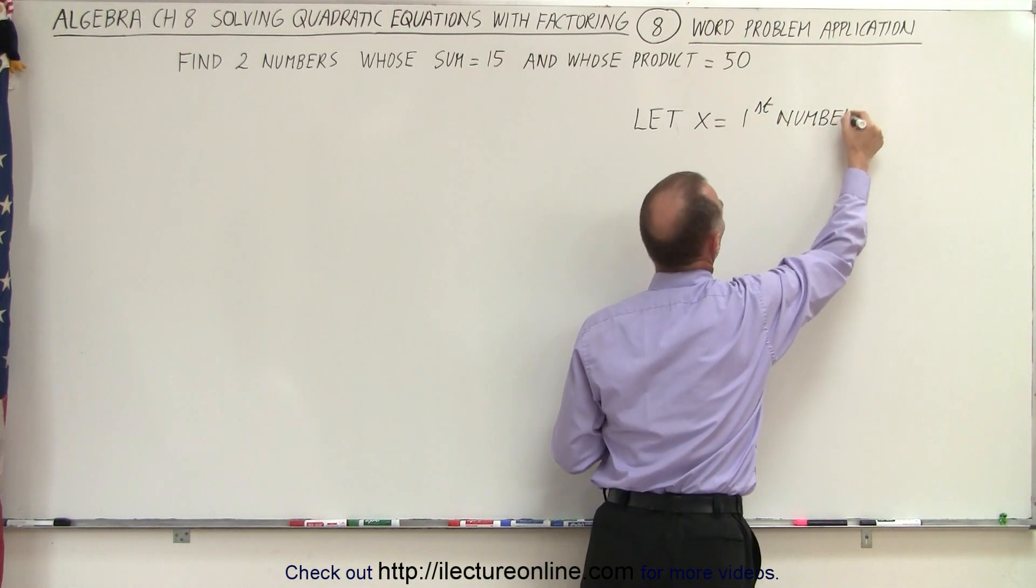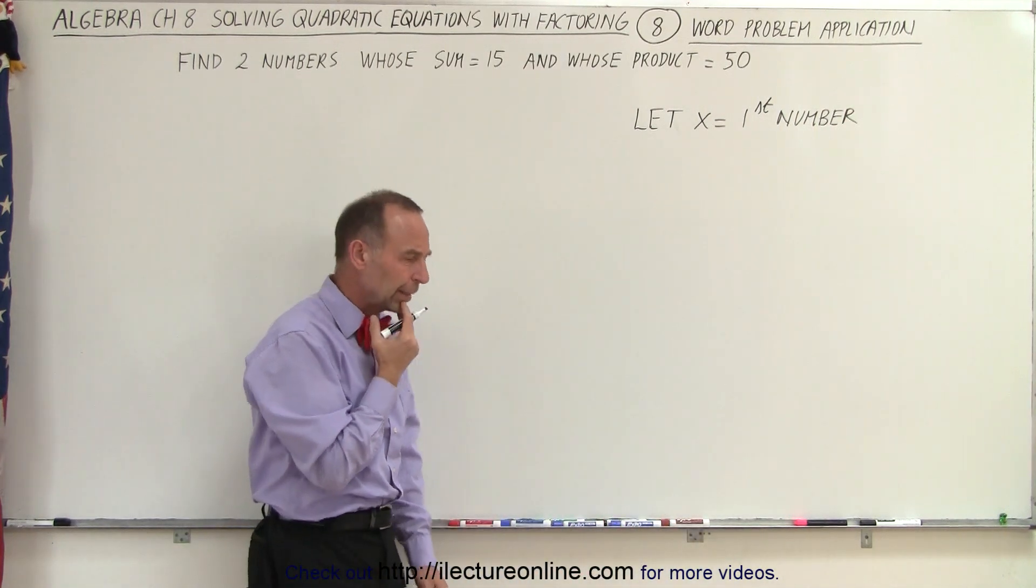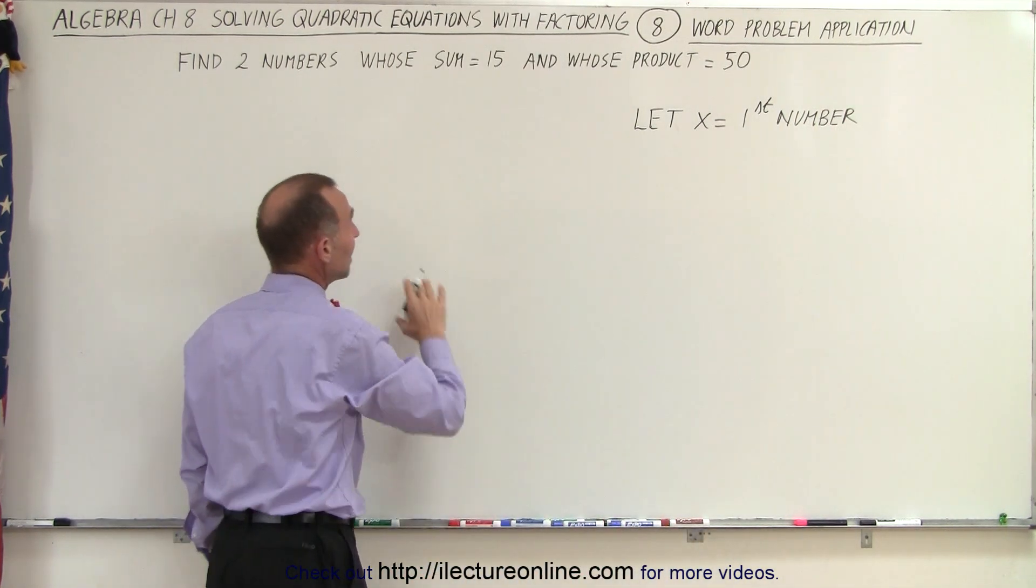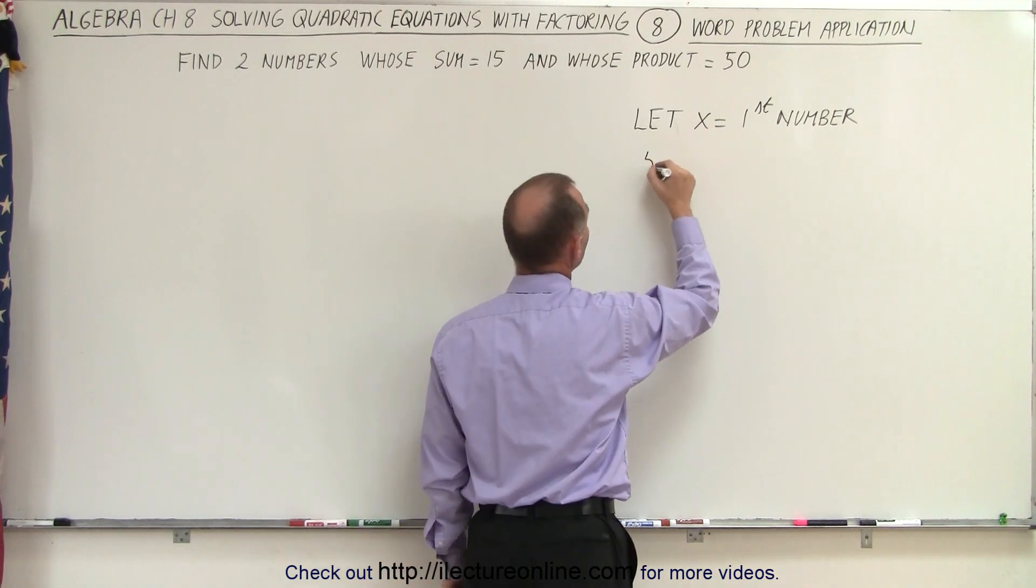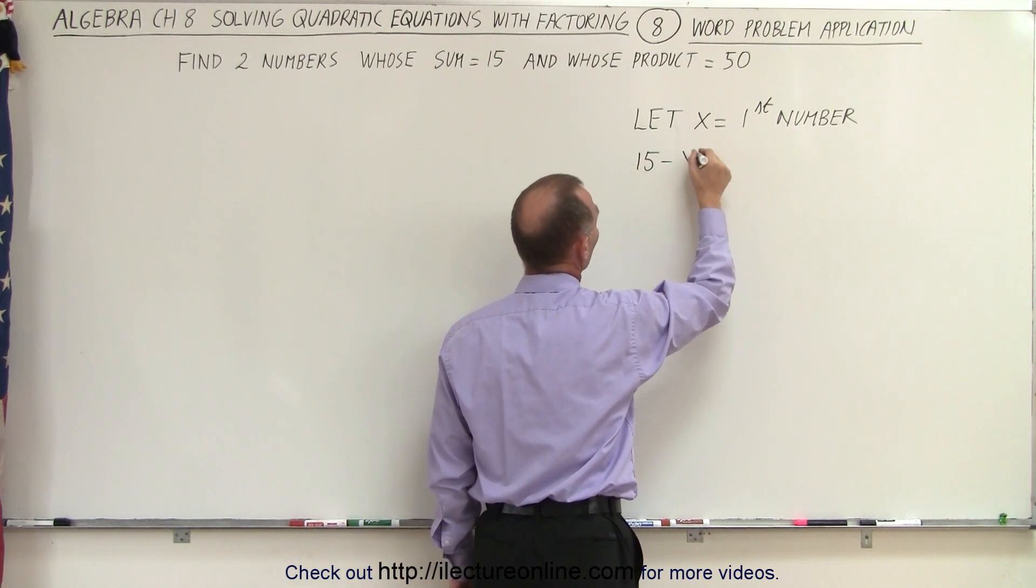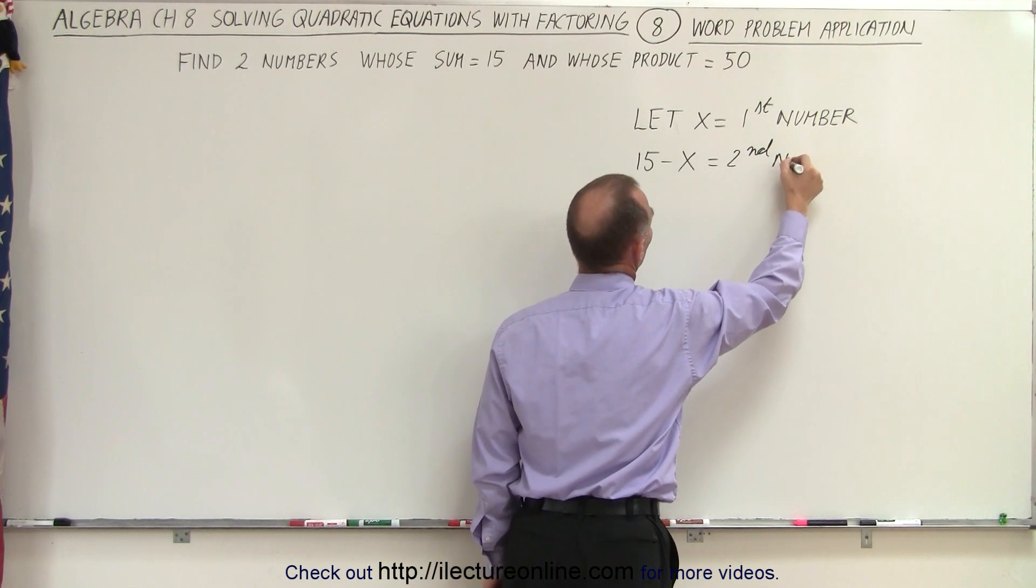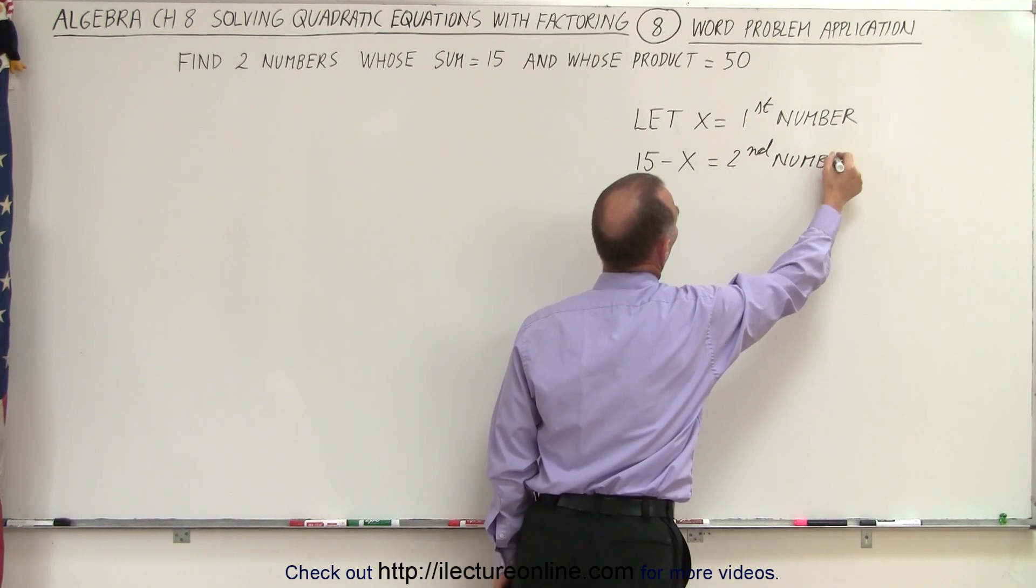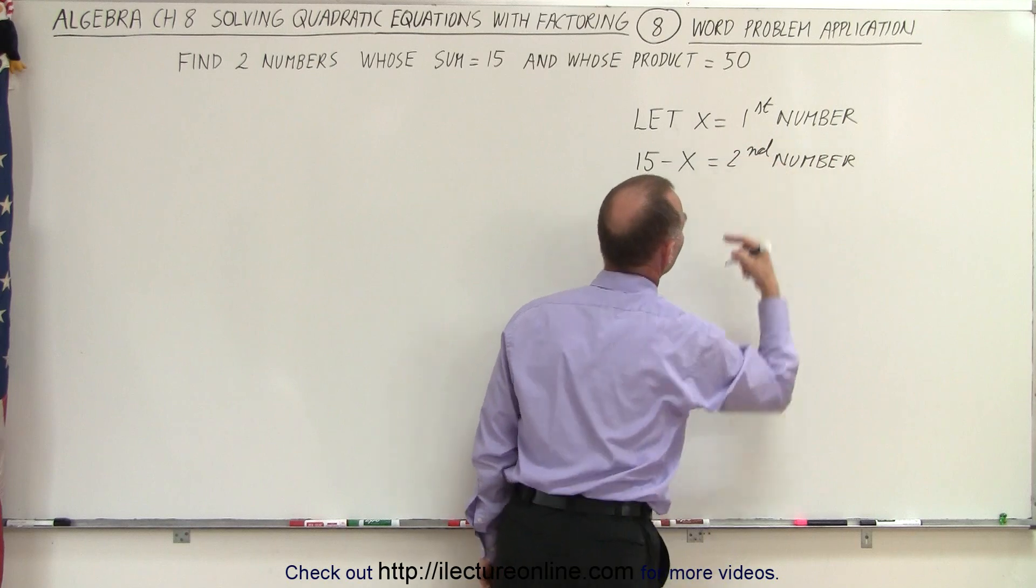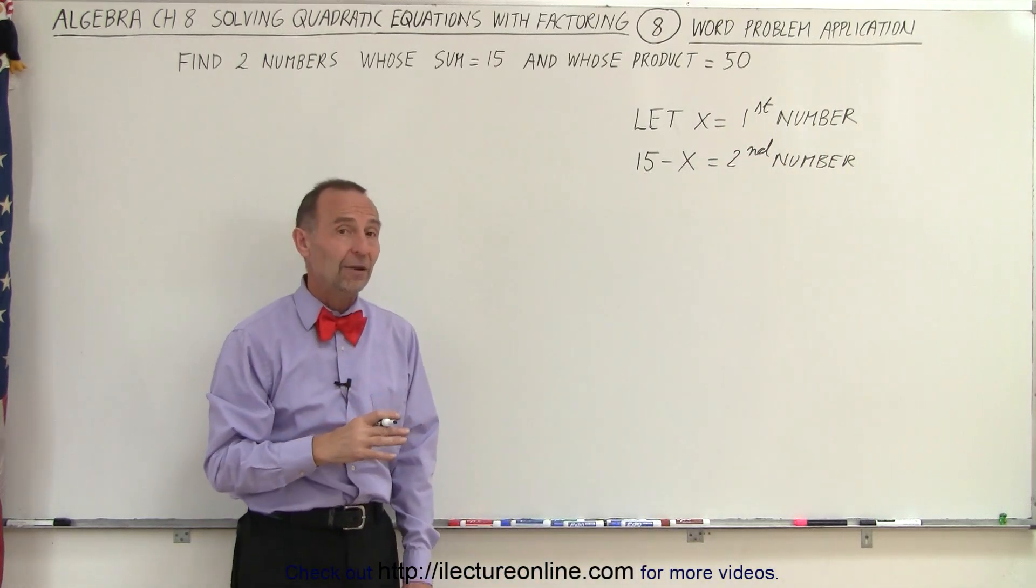Now how would we express that second number? Well we know that the sum equals 15, so that means that 15 minus the first number must equal the second number. So we take the total sum of the two numbers, subtract the value of the first number, and we get the second number.